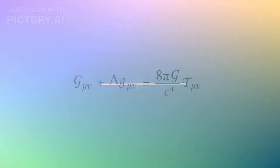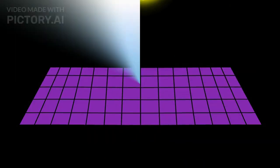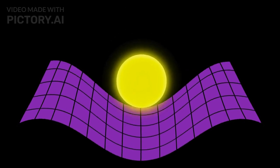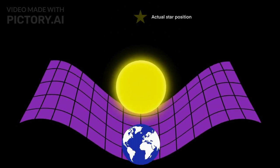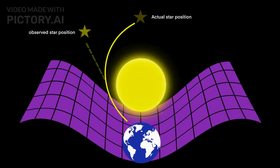Einstein's equations revealed that gravity is not just a force but a warping of the fabric of space-time itself. Picture space-time as a stretched rubber sheet, massive objects like stars or planets create dips in this sheet, and other objects move along these curves.